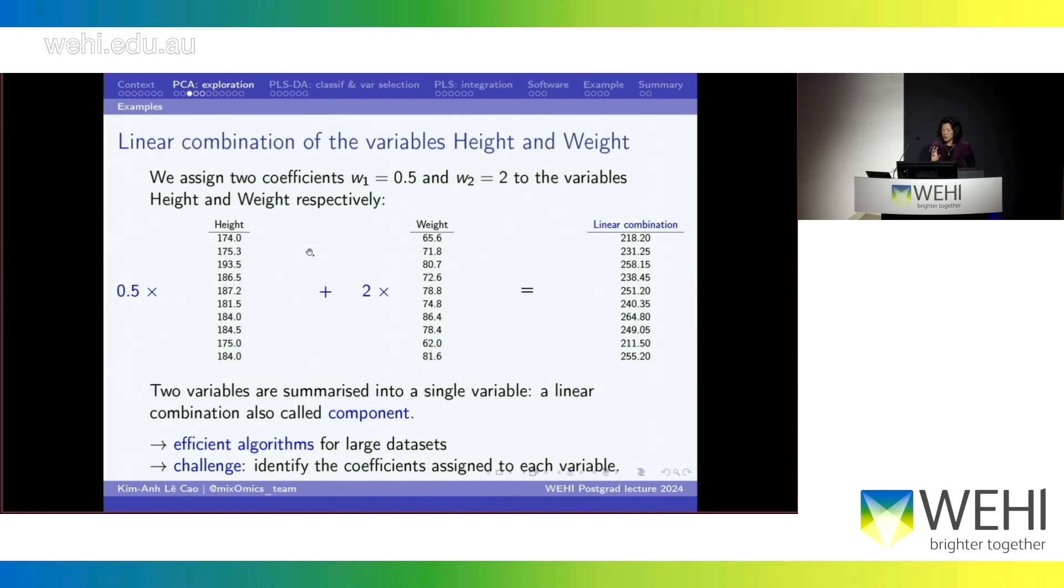Or you can do another combination of coefficients. So here, for example, I decided to apply the coefficient 0.5 to height and a coefficient of 2 to weight, because I say, well, actually, I think weight is more important than height for the problem I have to deal with. So you can calculate that.